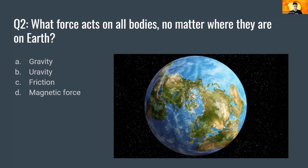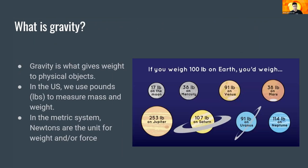Almost everyone answered gravity, which is the right answer. It's a force actually acted upon by all masses in the universe, and gravity is what gives objects their weight. In the US, we use pounds to denote mass and weight, but outside the US in the metric system, we use Newtons for the unit of force and weight, since force and weight are essentially the same thing. Since weight is a measure of the force that the Earth is exerting on you, if I were to weigh 253 pounds on Jupiter, I'd actually weigh 17 pounds on the Moon, because the Moon exerts a smaller magnitude of gravity on me.